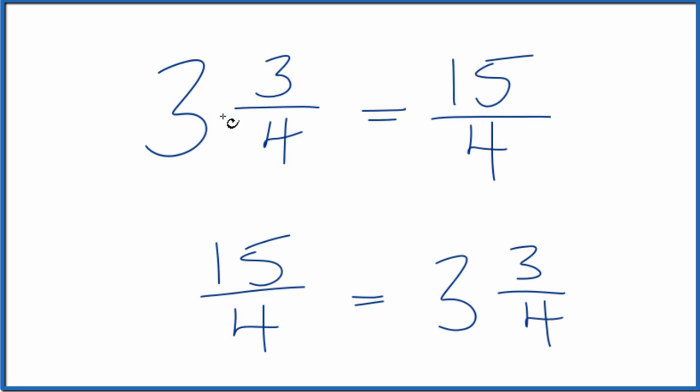So to answer our question, 3 and 3 fourths, the mixed number, equals the improper fraction 15 fourths.